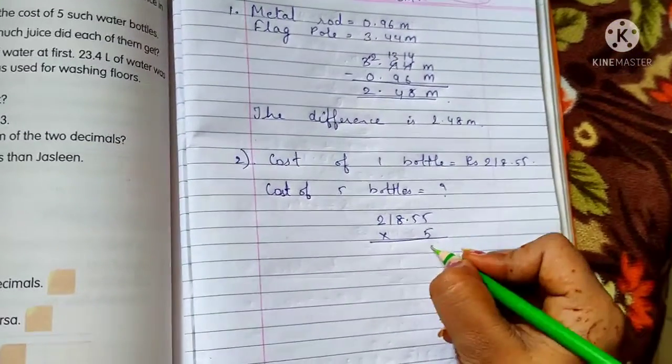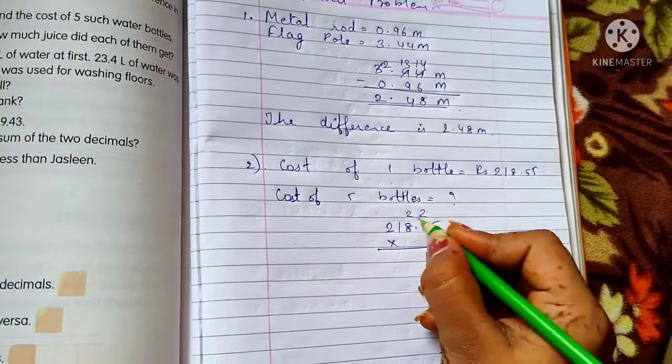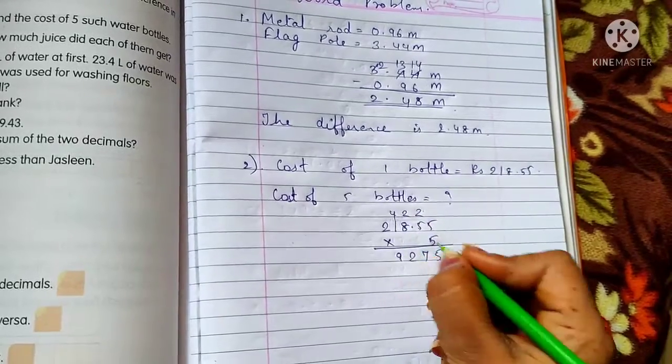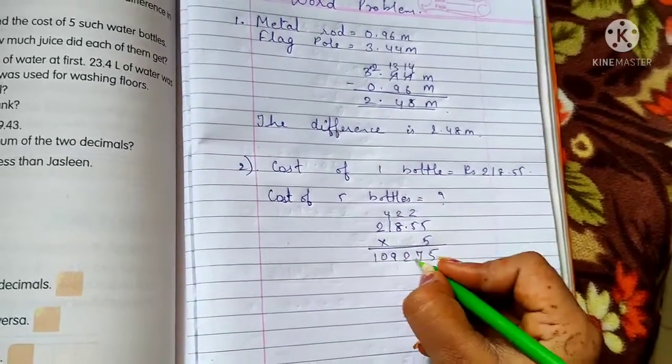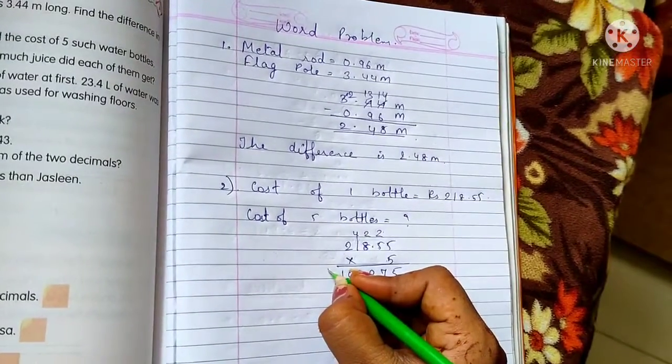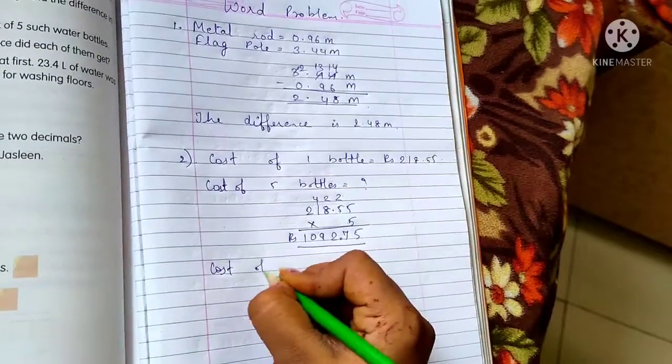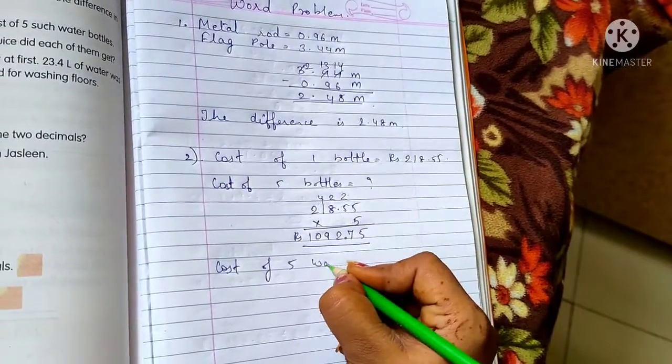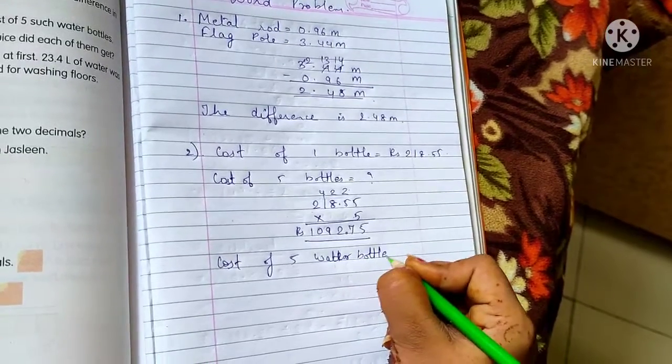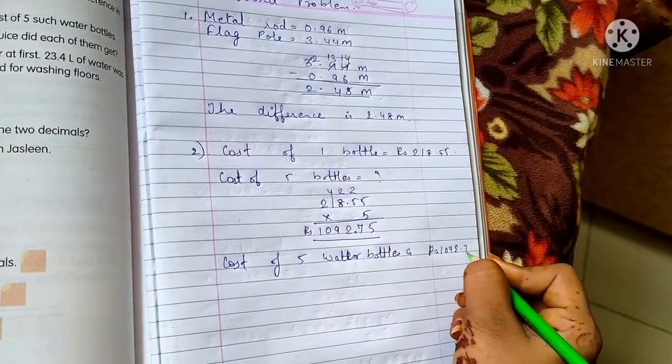5 times 5 is 25. 5 times 5 is 25 plus 2 is 27. 5 times 8 is 40 plus 2 is 42. 5 times 1 is 5 plus 4 is 9. 5 times 2 is 10. So what is the answer? Cost of 5 water bottles is Rs. 1092.75.